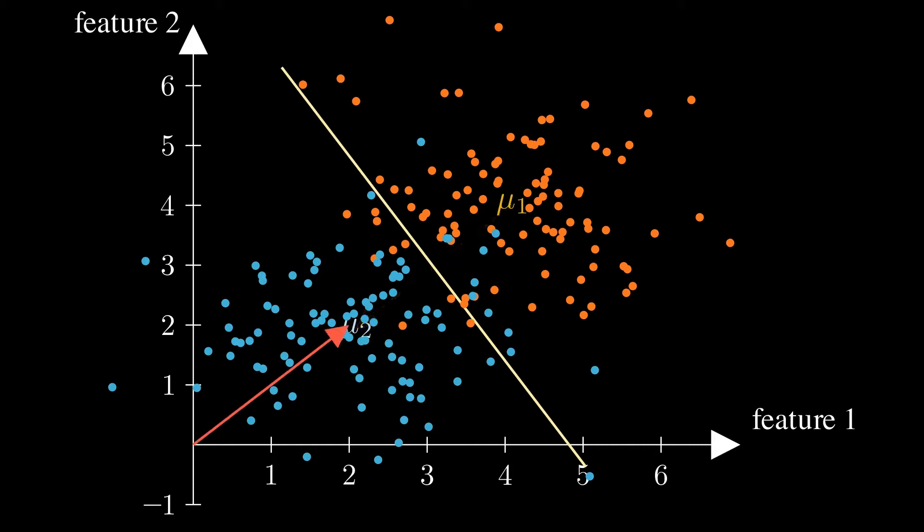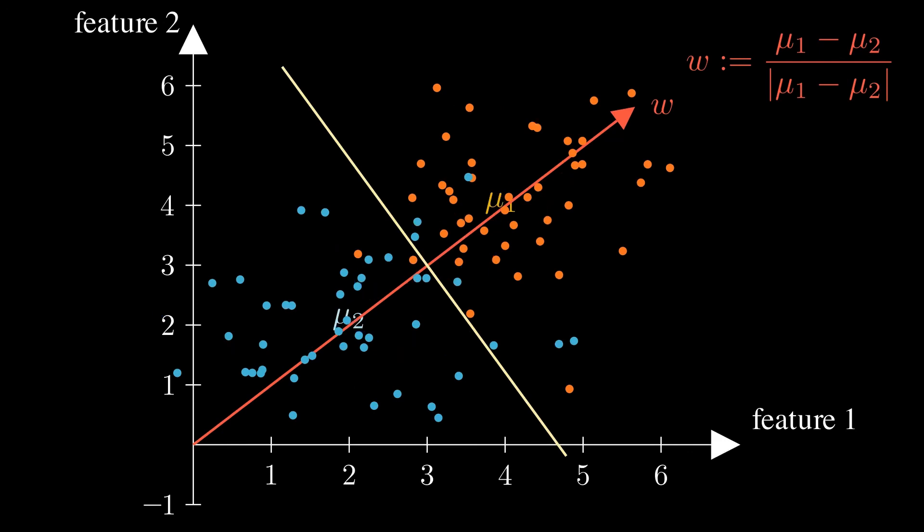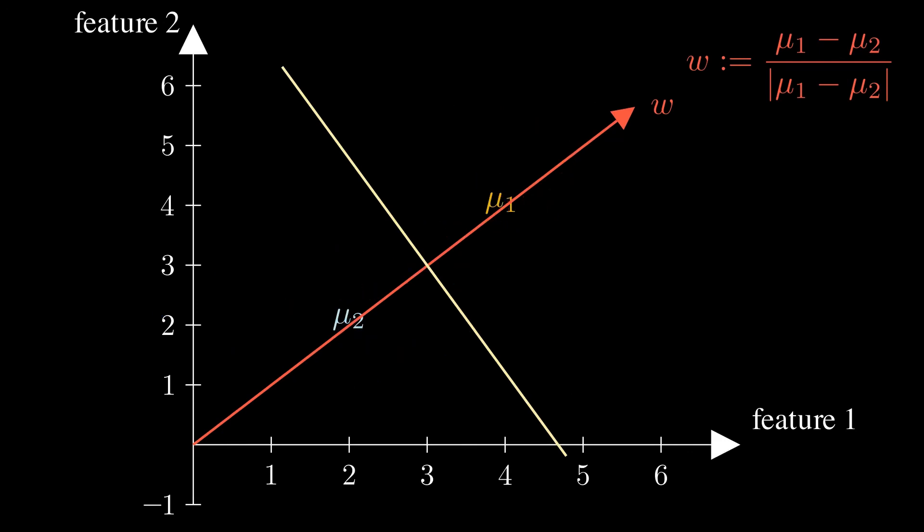What we are now looking for is the vector w, which originates from 0, and where we will later project the data onto to calculate its class. And this vector w is exactly given by the difference of the means, perhaps also normalized. Good, let's again focus on one new data point, that we want to formally classify.